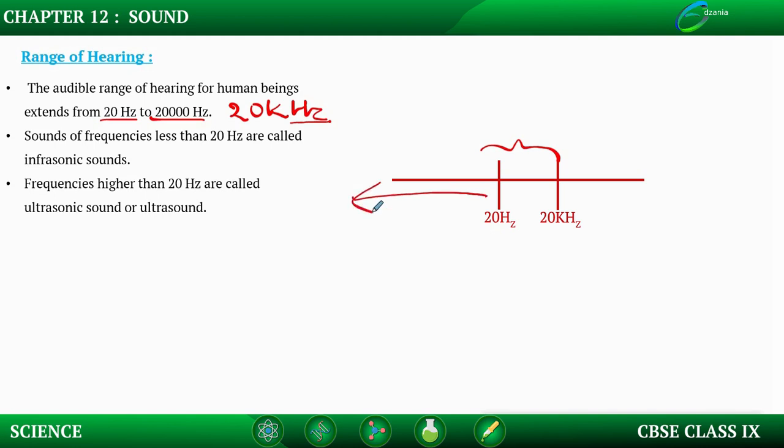But what about the frequencies which are lower than this and the frequencies which are higher than this? There are different life forms that can detect them. Frequencies which are below 20 hertz are known as infrasonic frequencies, and the frequencies above 20 kilohertz are known as ultrasonic frequencies.